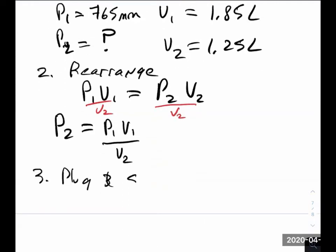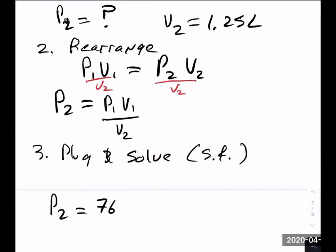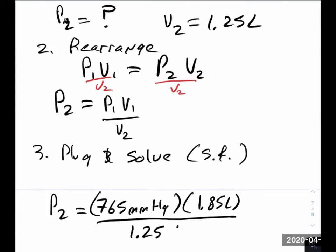Now I'm going to plug in and solve, and I'm going to worry about sig figs. P2 is equal to P1, the P1, 765 millimeters of mercury, times V1, which was 1.85 liters, divided by V2, which was 1.25 liters. What happens to the units? The liters cancel. And then it looks like I have three sig figs for everything. So my answer is going to be three. And I get, well, my raw value is 1,132.2. I'm going to round that to three sig figs. So 1,132 millimeters would be my answer. That would be my final situation. That's an example of doing Boyle's Law.